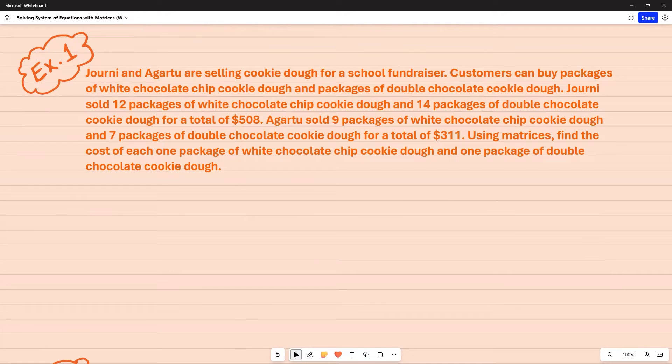I would identify my variables. So I have X, which we're going to say is going to be the white chocolate chip cookie dough, and the Y will represent the double chocolate cookie dough.